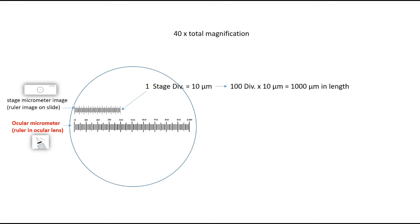Now let's put back the stage micrometer and change the 4x objective lens to the 10x objective lens and do the calculations all over again. By doing this, you should notice that the stage micrometer's image is a lot bigger than before, but equally important is that the ocular micrometer's image stayed the same. Again I want to align the two micrometers. Remember: one division of the stage micrometer is 10 micrometers and the total length is 1,000 micrometers. Please pause the video now and see if you can calculate how many micrometers one ocular division equals.